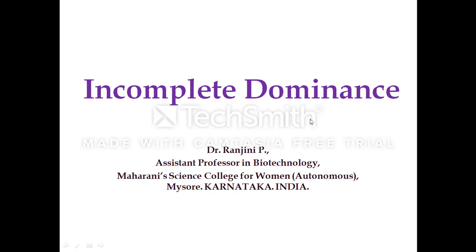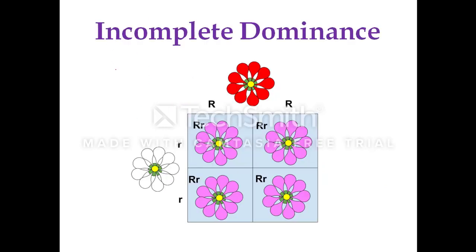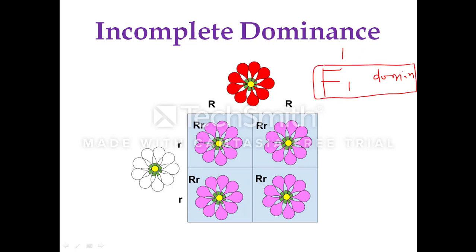In a monohybrid cross, when a homozygous dominant parent is crossed with a homozygous recessive parent differing in a single contrasting character, all the offspring in the F1 generation will have the dominant phenotype. This is the monohybrid cross where complete dominance occurs, which is why the law of dominance was proposed by Gregor Mendel.